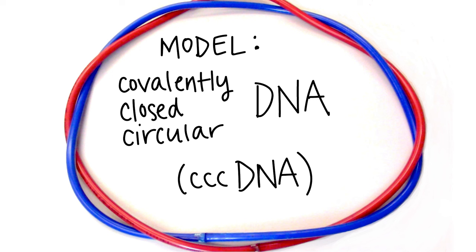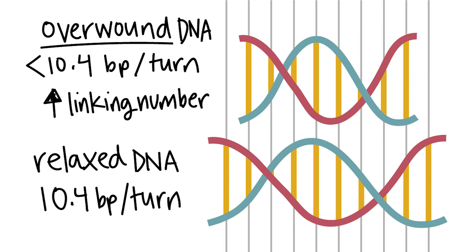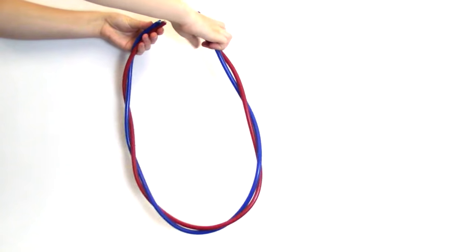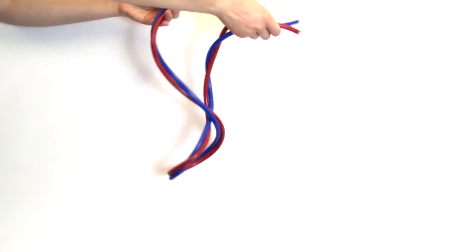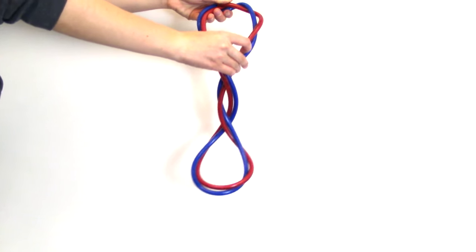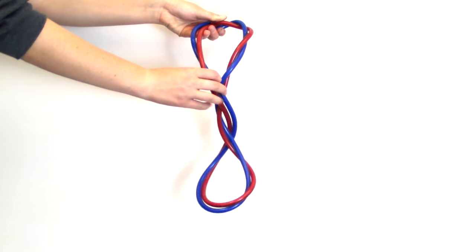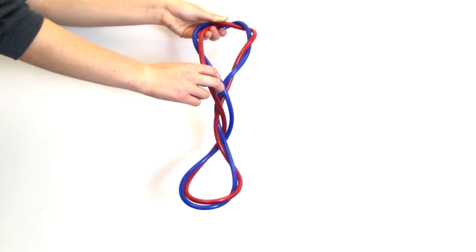But what would physically happen to this DNA if you added or removed twists or writhe in the double helix? Overwound DNA has fewer than 10.4 base pairs per turn of the helix. Thus, overwound DNA is more tightly wound than relaxed DNA, and has a greater number of twists and a higher linking number than relaxed DNA. When DNA is overwound and has an increased linking number, the DNA becomes positively supercoiled, and the double-stranded structure begins wrapping around itself and creating positive writhe. Remember that positively supercoiled DNA will have a higher linking number than relaxed DNA, and the two strands of the double-stranded DNA are more difficult to separate.